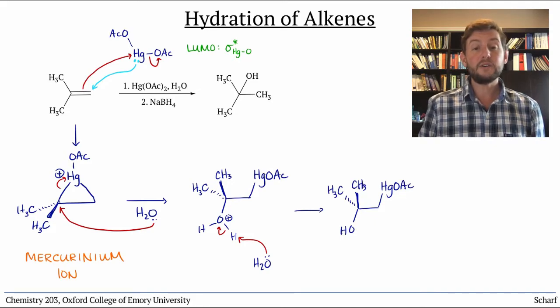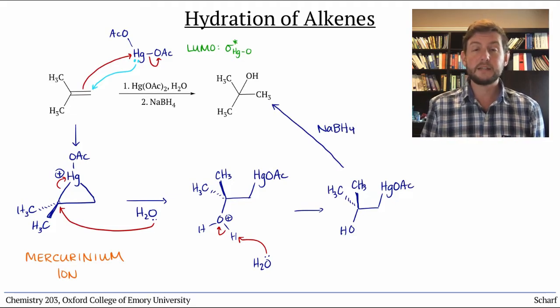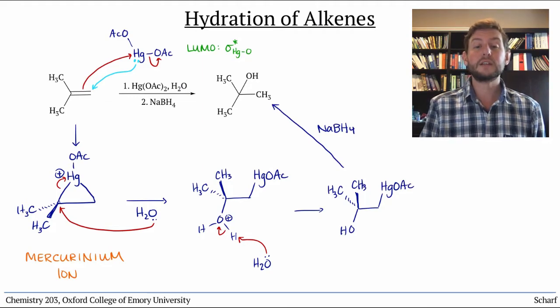Sodium borohydride replaces the mercury with a hydrogen. We won't concern ourselves with the mechanism of that step. This sequence, called oxymercuration-reduction, is the most reliable way to convert alkenes to alcohols where the OH group goes to the more substituted site.